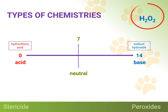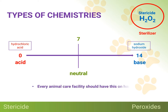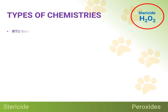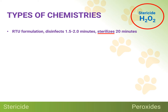The next peroxide solution to be discussed is Stericide, the only EPA-approved liquid surface sterilizer on the market. If you want to make use of a peroxide, this is a far better choice than accelerated hydrogen peroxide. We believe every animal care facility in the country should have Stericide on hand in the event of an outbreak and for use in isolation wards. Sterilizing is a step above disinfection, killing 100% of all forms of microbial life in 20 minutes. Though slightly acidic, having a pH of 4.5, it is not nearly as acidic as accelerated hydrogen peroxide products are, making it far safer to use. Consider some of the following bullet points.